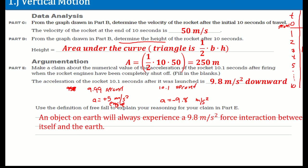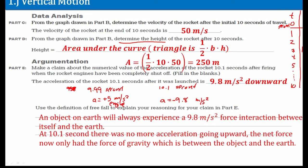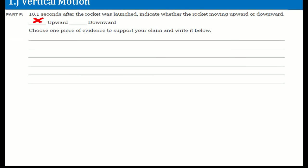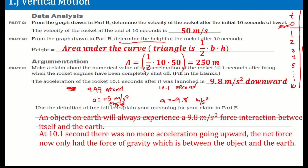An object on Earth will always experience a 9.8 meters per second squared force interaction between itself and Earth. At 10.1 seconds, there was no more acceleration going upwards — no engine thrust. The net force now only had the force of gravity between the object and the Earth, so the acceleration caused is due to the pulling of the Earth on the rocket, which is 9.8 meters per second squared downwards.